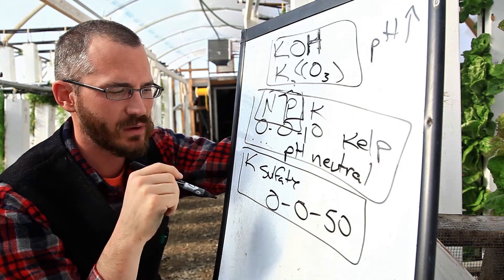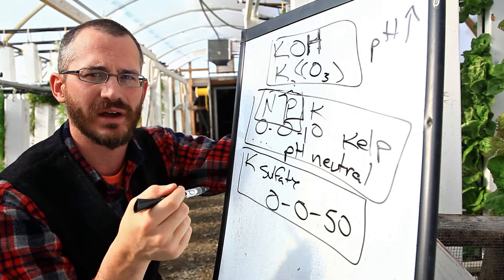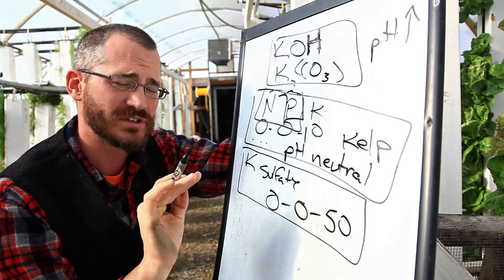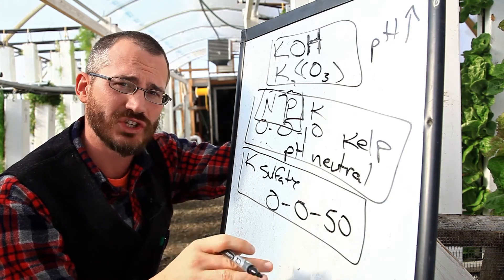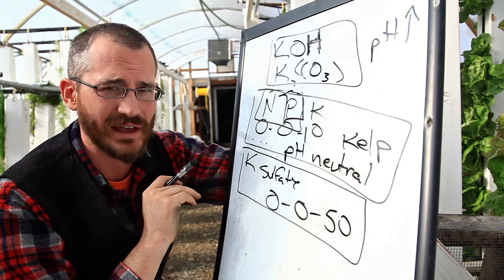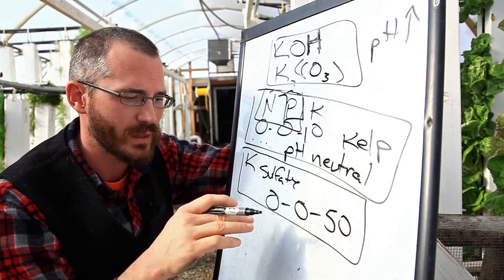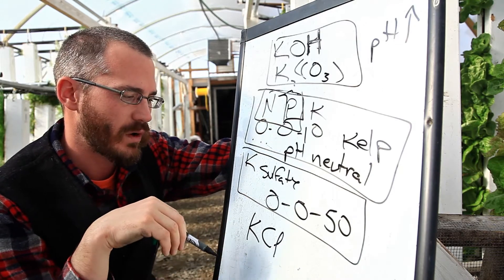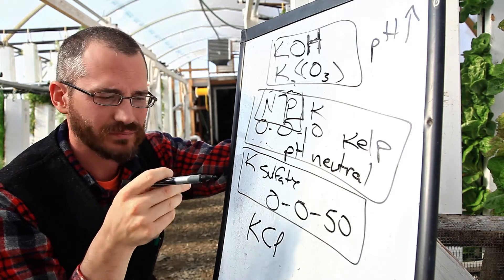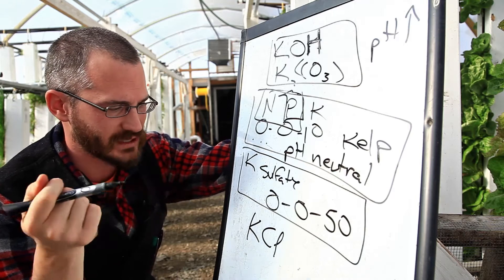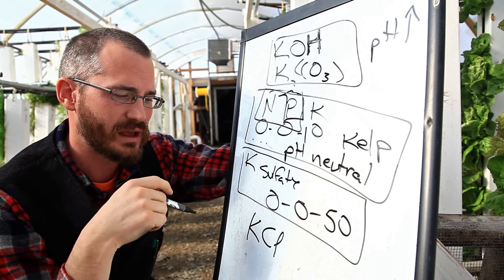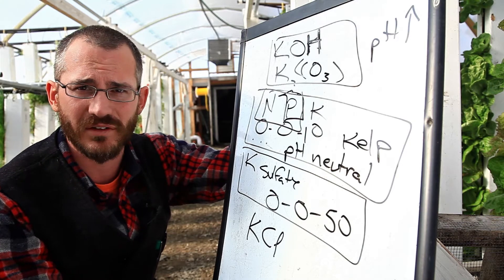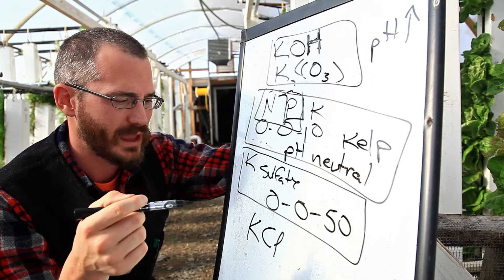But it works to correct these deficiencies fairly fast in solution. Now if you're seeing deficiency symptoms and you need to treat it right away, we're talking within the next one to two weeks, then you're going to have to use potassium chloride. So potassium chloride, it's a simple salt. A lot of people use it in de-icer, so a lot of de-icing salts use potassium chloride.